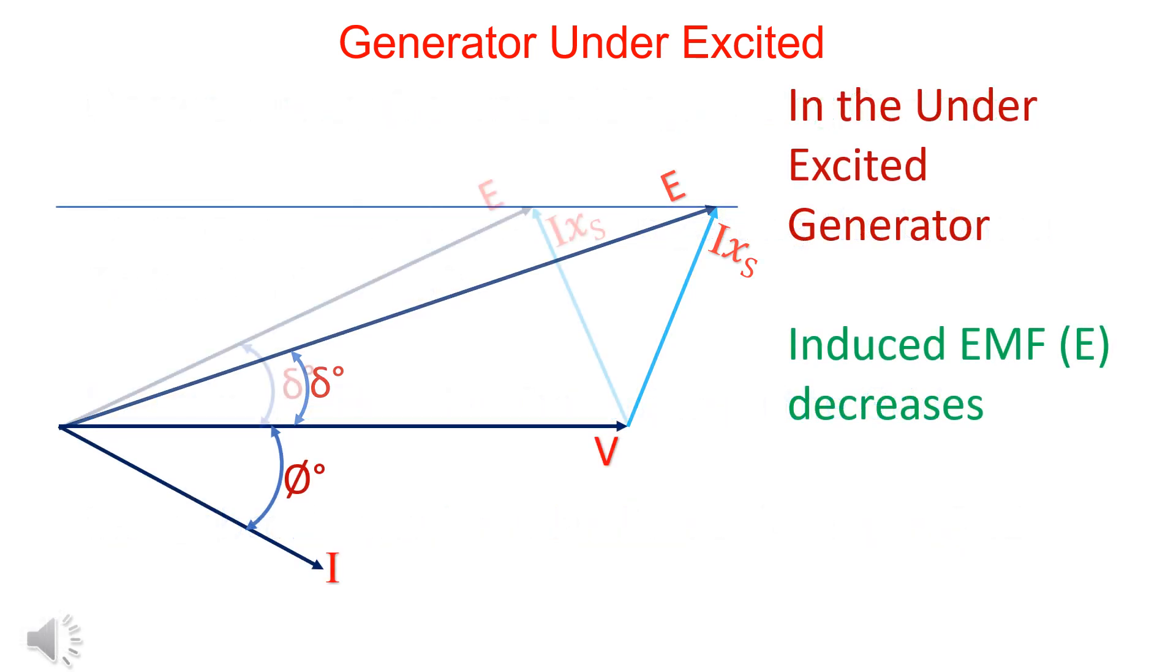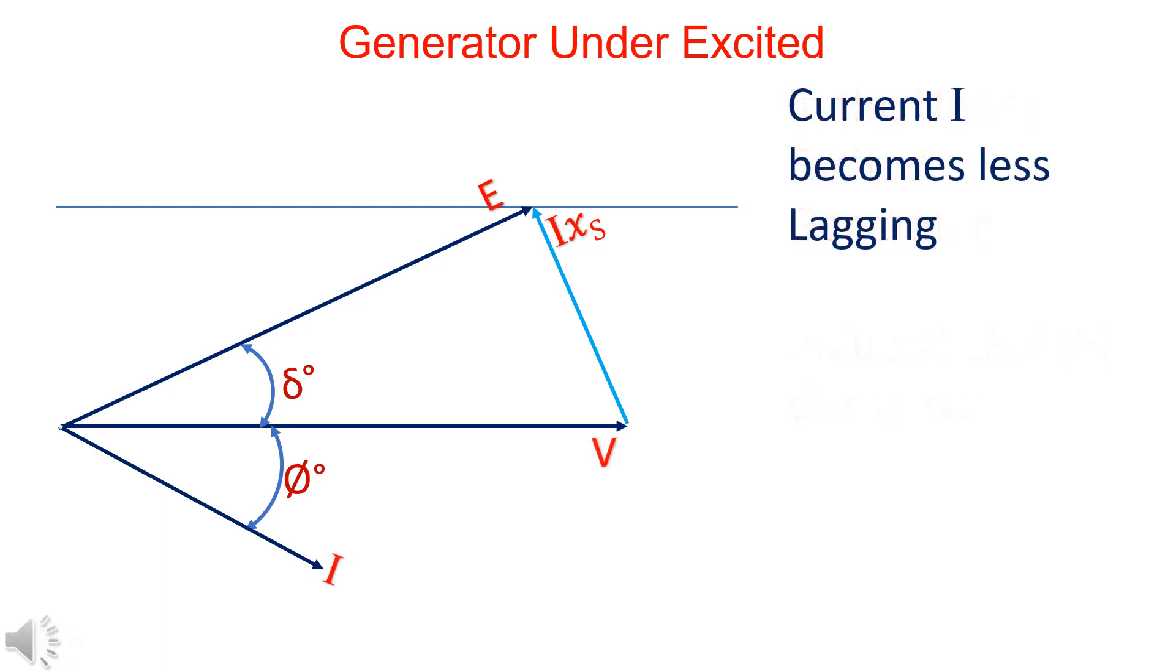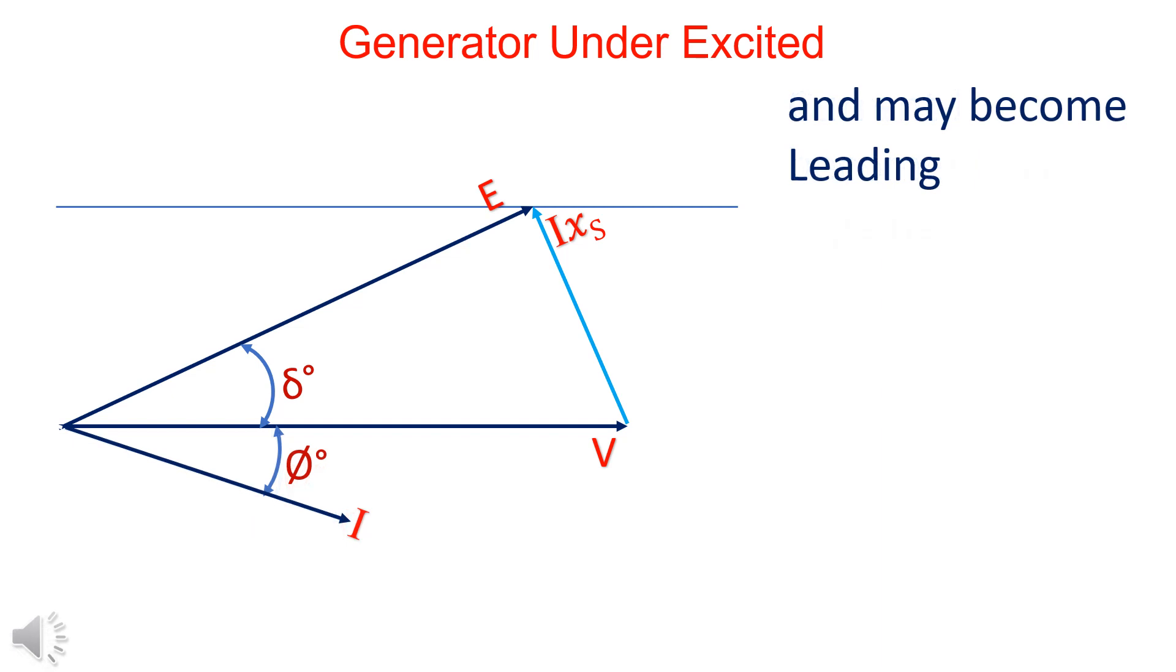When the generator is under-excited, induced EMF decreases. The IXs leads and current becomes less lagging, and it may lead the terminal voltage.